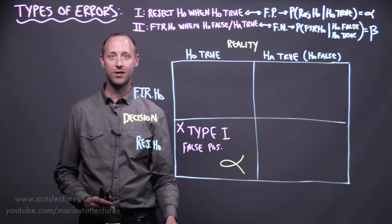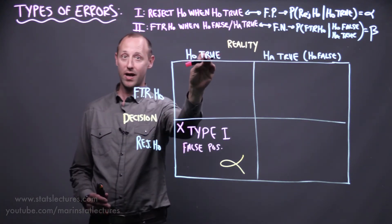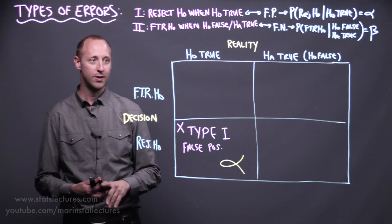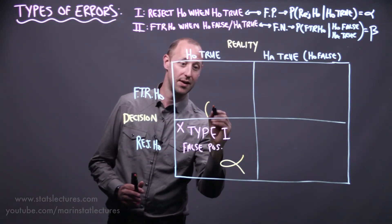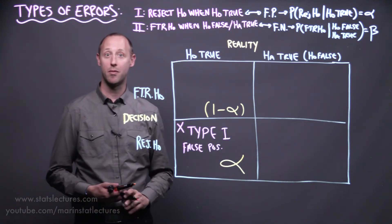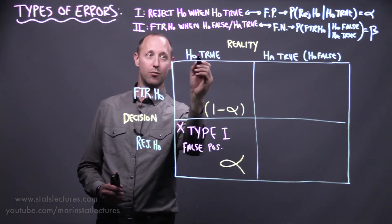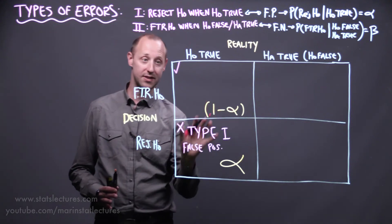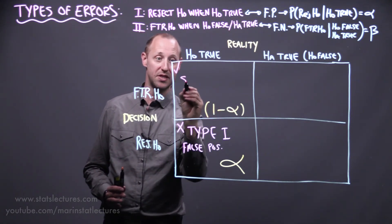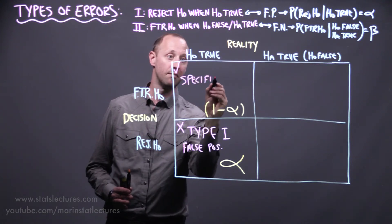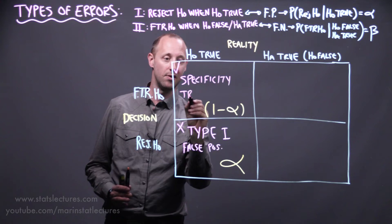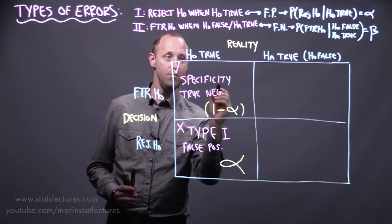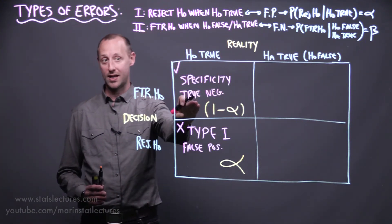Notice that the column sums to 1 — when the null is true, we'll either reject it or fail to reject it 100% of the time. So when the null is true and we fail to reject it, that's making a correct decision, and it happens with probability 1 minus alpha. This cell is often called specificity, or sometimes a true negative — we have a negative result, we fail to reject the null, and that's correct.